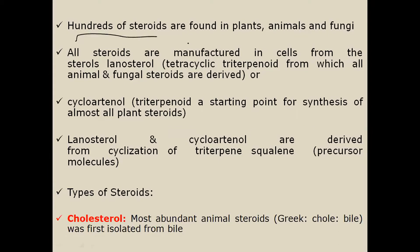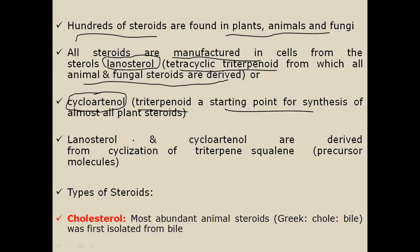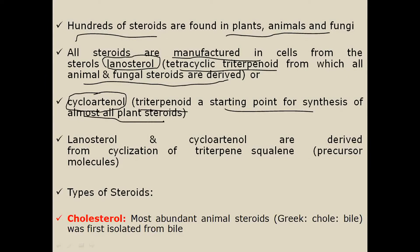Steroids are a very diverse group of compounds and hundreds of steroids are found in plants, animals, and fungi. All steroids are manufactured in cells from a steroid named lanosterol. Lanosterol is a tetracyclic triterpenoid, a type of terpene and secondary metabolite found in plants, from which all animal and fungal steroids are derived. Another precursor is cycloartanol, also a triterpenoid and the starting point for the synthesis of almost all plant steroids.